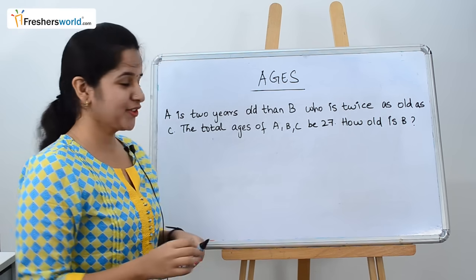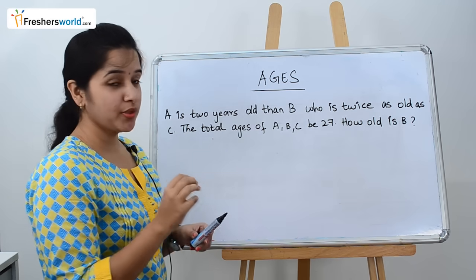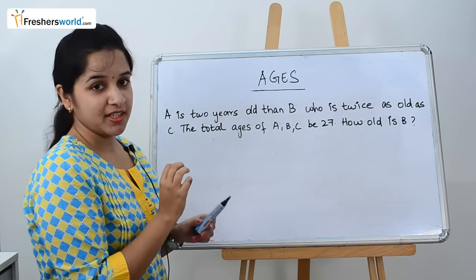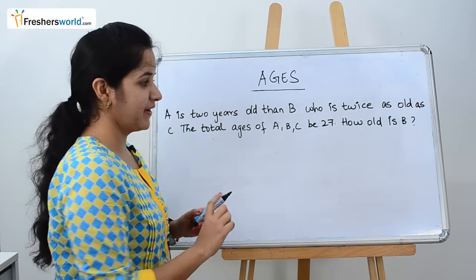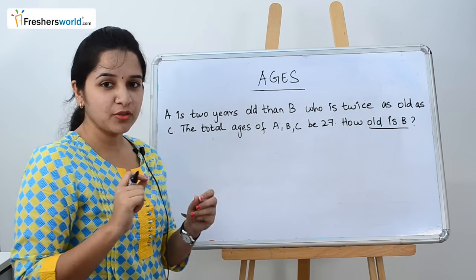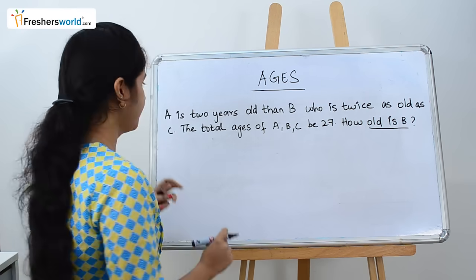The next question is: A is 2 years older than B, who is twice as old as C. The total ages of A, B, C is 27, and they're asking us to find how old is B. We have to find which is the X variable here.